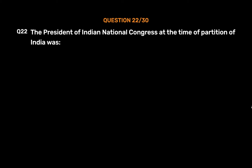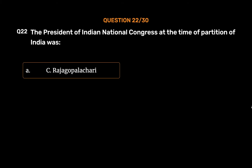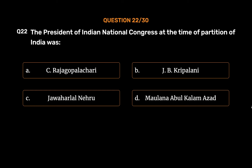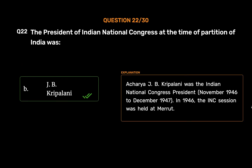Question No. 22. The President of Indian National Congress at the time of partition of India was: Option A: C. Rajagopalachari. Option B: J.B. Kripalani. Option C: Jawaharlal Nehru. Option D: Maulana Abul Kalam Azad. The correct answer is Option B: J.B. Kripalani. Acharya J.B. Kripalani was the Indian National Congress President from November 1946 to December 1947. In 1946, the INC session was held at Meerut.